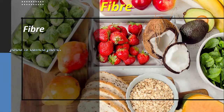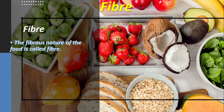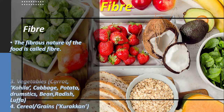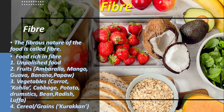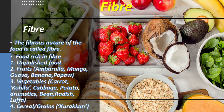The fibrous nature of food is called fiber. Foods rich in fiber include unpolished food items, fruits such as ambarella, mango, guava, banana, and pepper, vegetables such as potato, cabbage, carrot, French beans, and radish, as well as cereals and grapes.